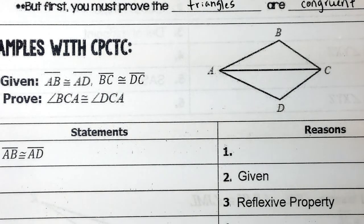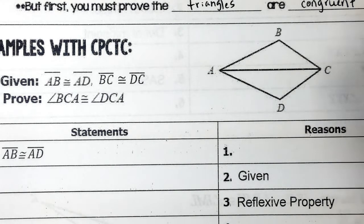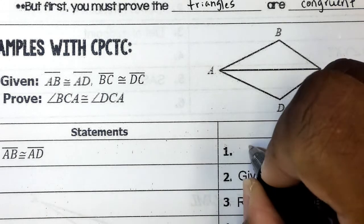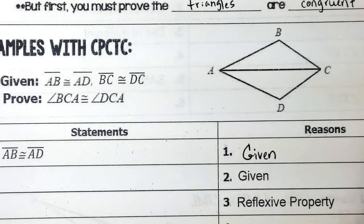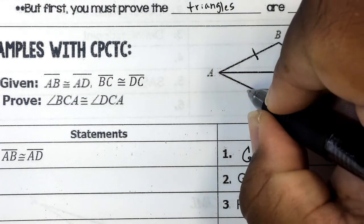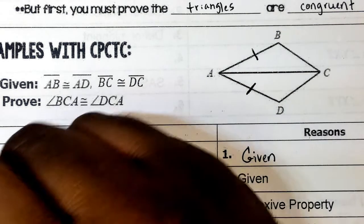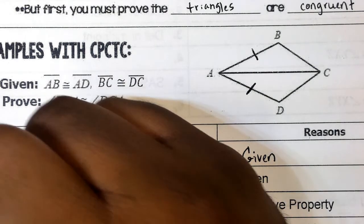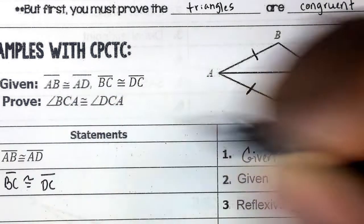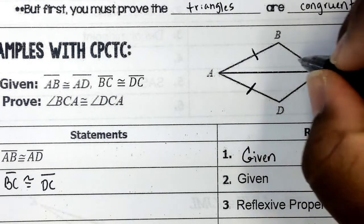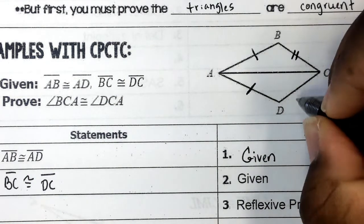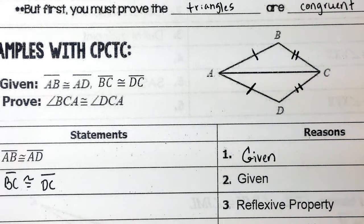Starting out the first proof. The first statement says AB is congruent to AD — what's the reason for that? Given. They gave us that congruence, so we mark it on our figure. The next line: BC is congruent to DC — given as well. We mark that on the figure too. Then the next step uses the reflexive property.